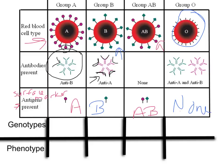Someone with both A and B surface markers won't make any antibodies, because if they made B antibodies they'd attack their B receptors, and if they made A antibodies they'd attack their A receptors. People with type O blood have no surface markers, so they make both kinds of antibodies — anything that comes into their body, they're ready to attack it. Think of antibodies as your defenders, and antigens as your markers or sentries, telling your defenders where to go and what to do.